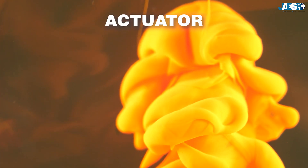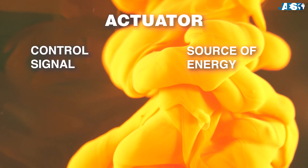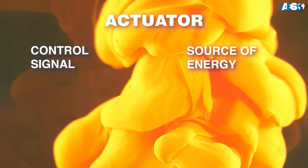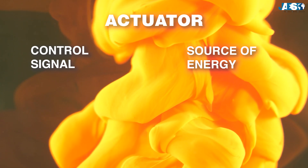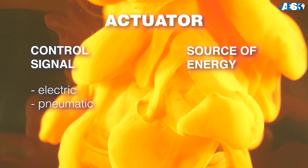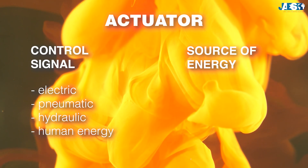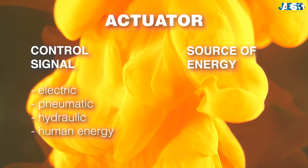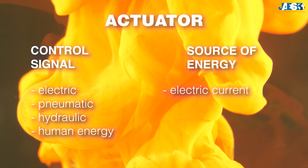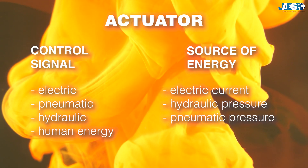An actuator controls a signal and a source of energy. The control signal has pretty low energy, and can be electric type, pressure of a fluid — pneumatic or hydraulic — or even human energy. The source of energy, on the other hand, can be an electric current, a hydraulic, or a pneumatic pressure.